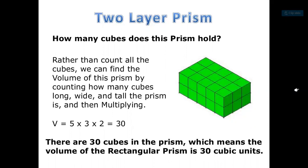The same idea: the height here is 2, the width is 3, and the length is 5. So I multiply 5 times 3 times 2 to get the number of small unit cubes, or the volume of the rectangular prism.